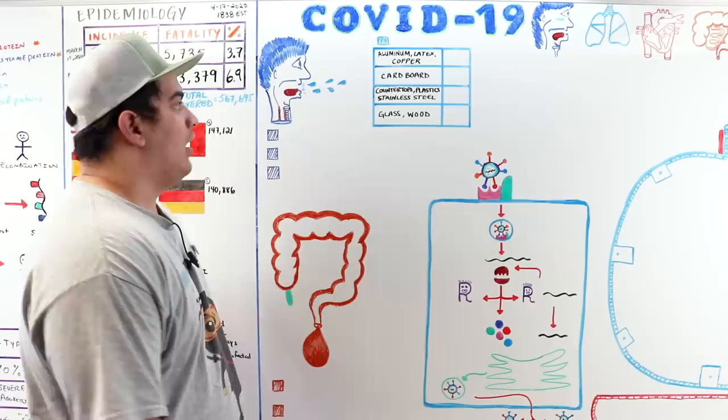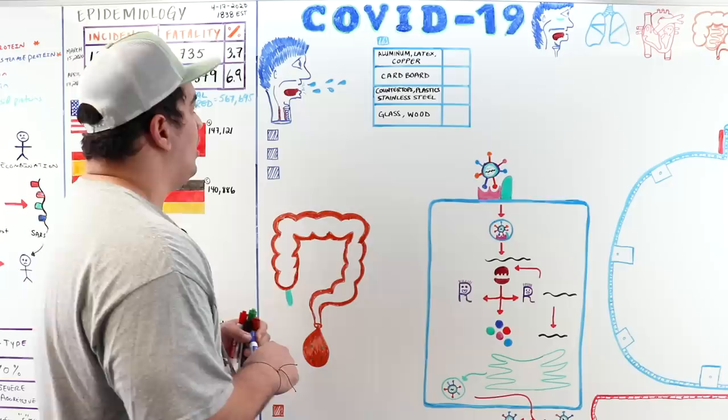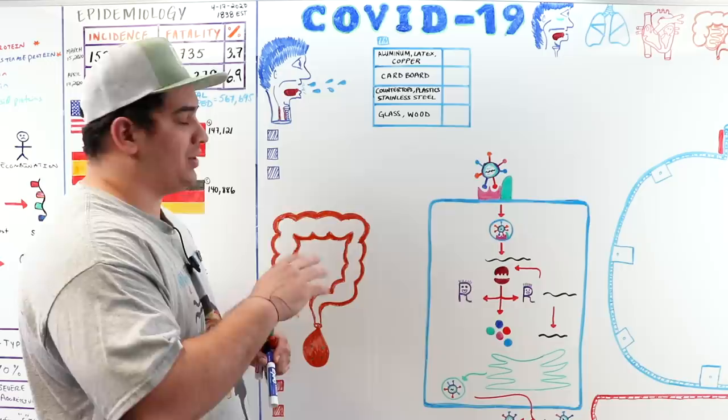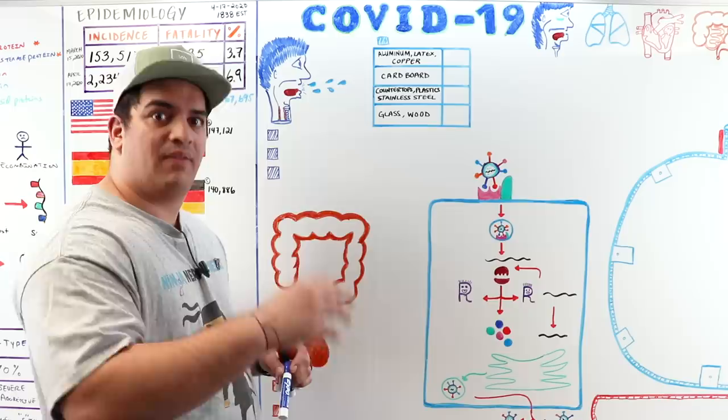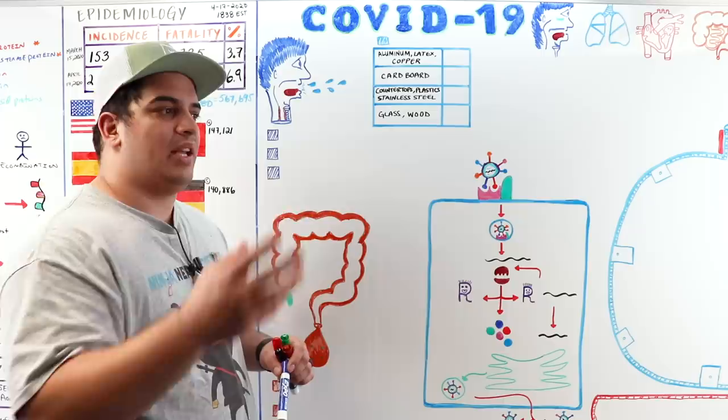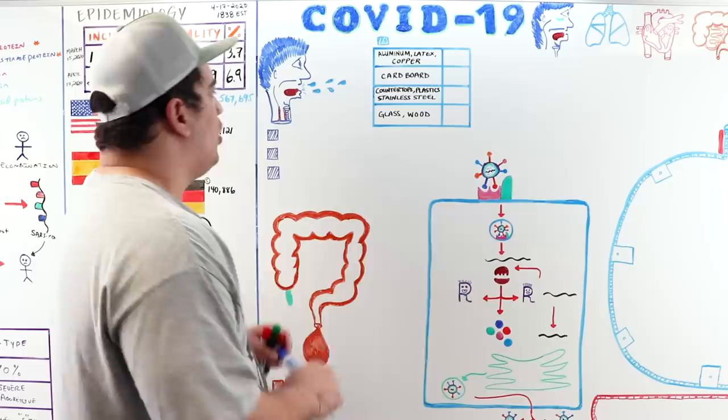Now for the pathophysiology of SARS-CoV-2 causing COVID-19. The incubation period — from infection to symptom onset — has a mean of around 5 days, but can range from 5 to 14 days, with some articles suggesting potentially longer.